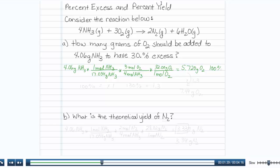and you find out that you have 5.720 grams of oxygen, which is 100 percent of your need. There's a couple of ways to figure it out from here.